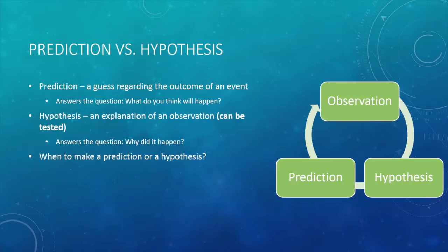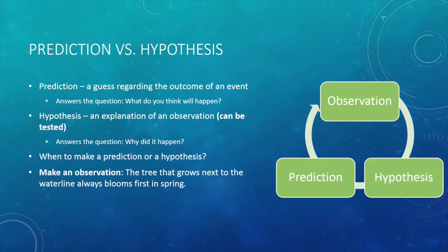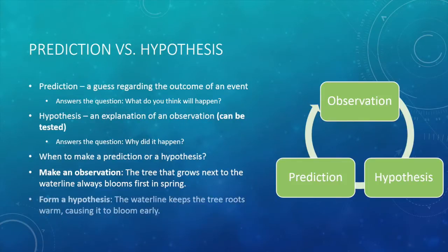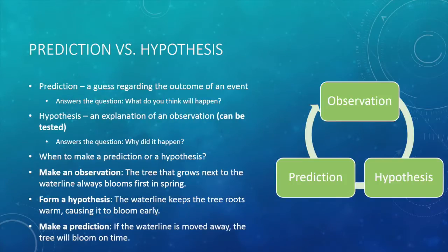Let's consider an example. I have made the observation that the tree that grows next to the waterline always blooms first in the spring. Based on this observation, I'm going to form a hypothesis: the waterline keeps the tree roots warm, causing it to bloom early. Now I'm going to make a prediction that if the waterline is moved away, the tree will bloom on time.